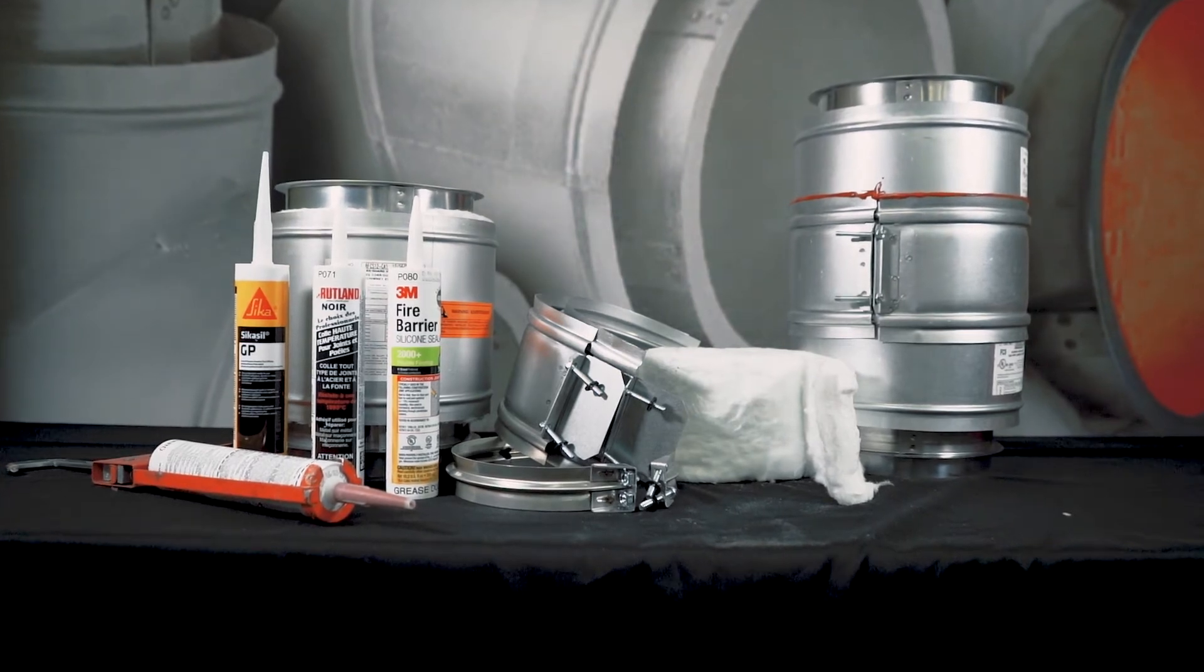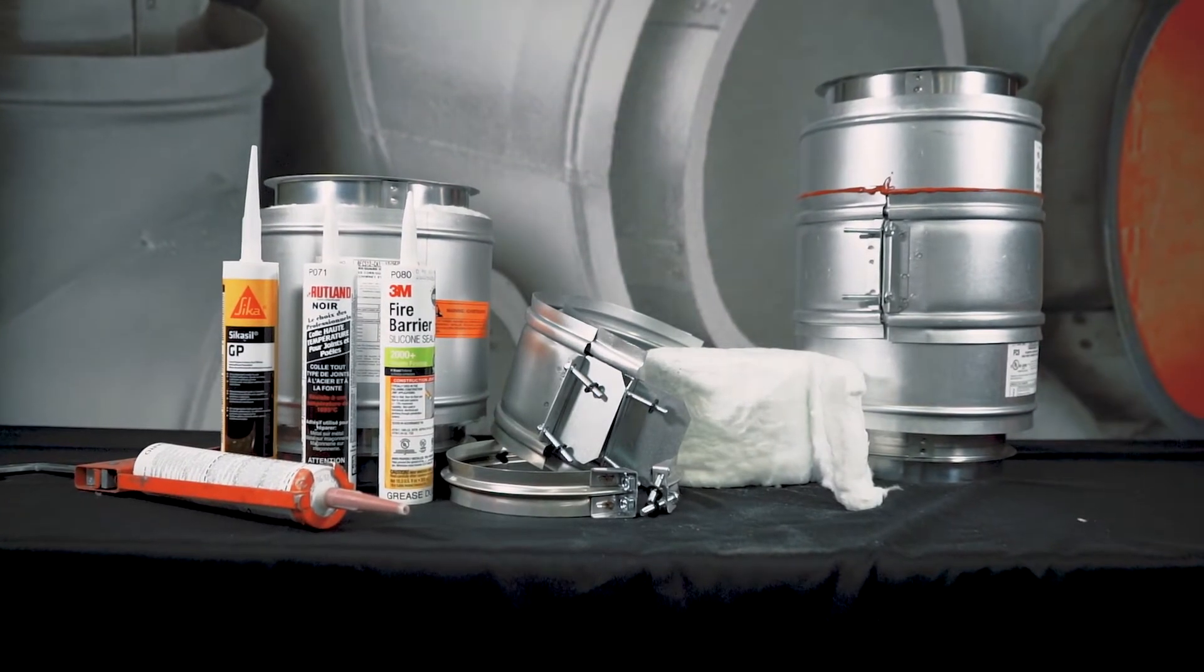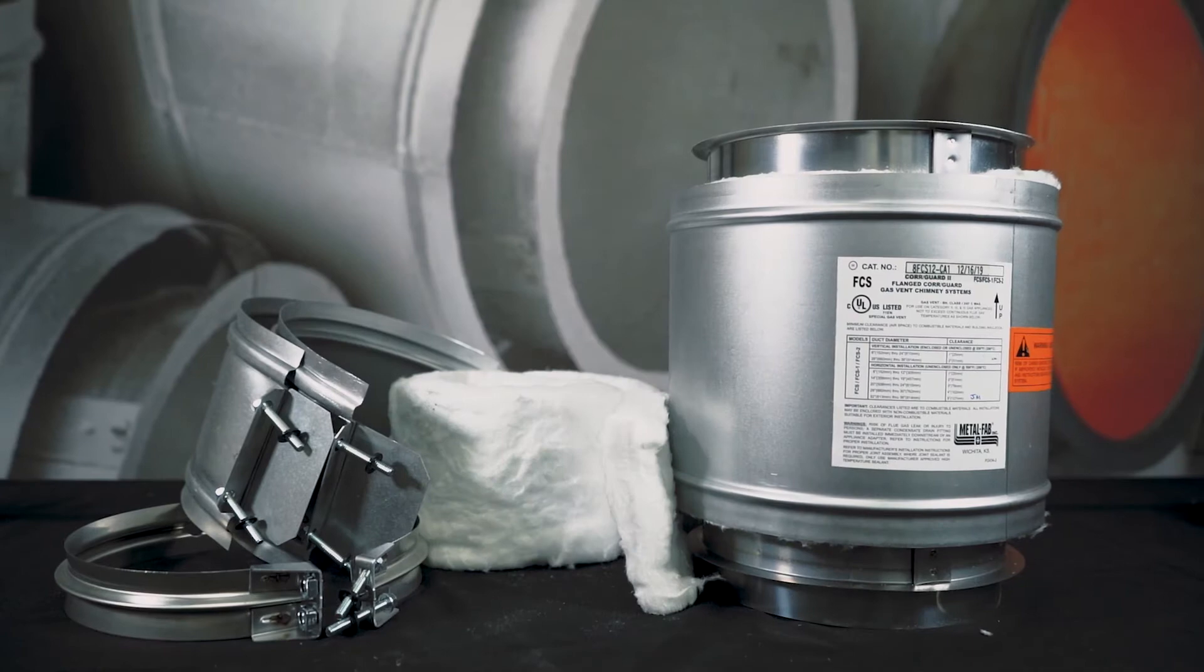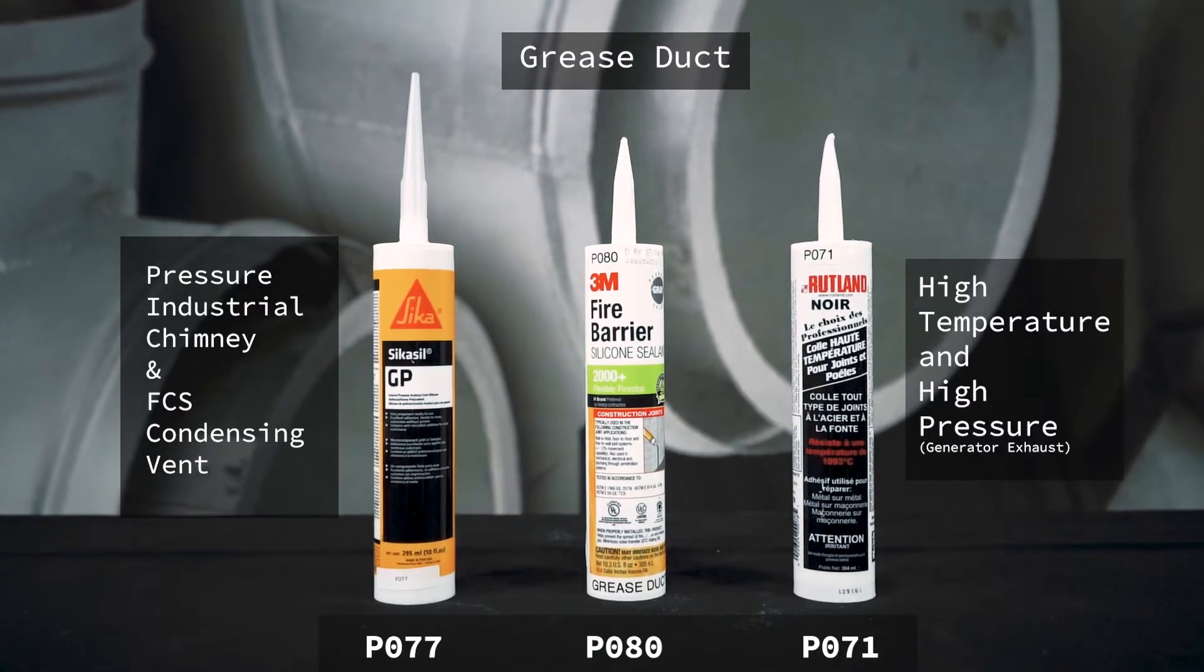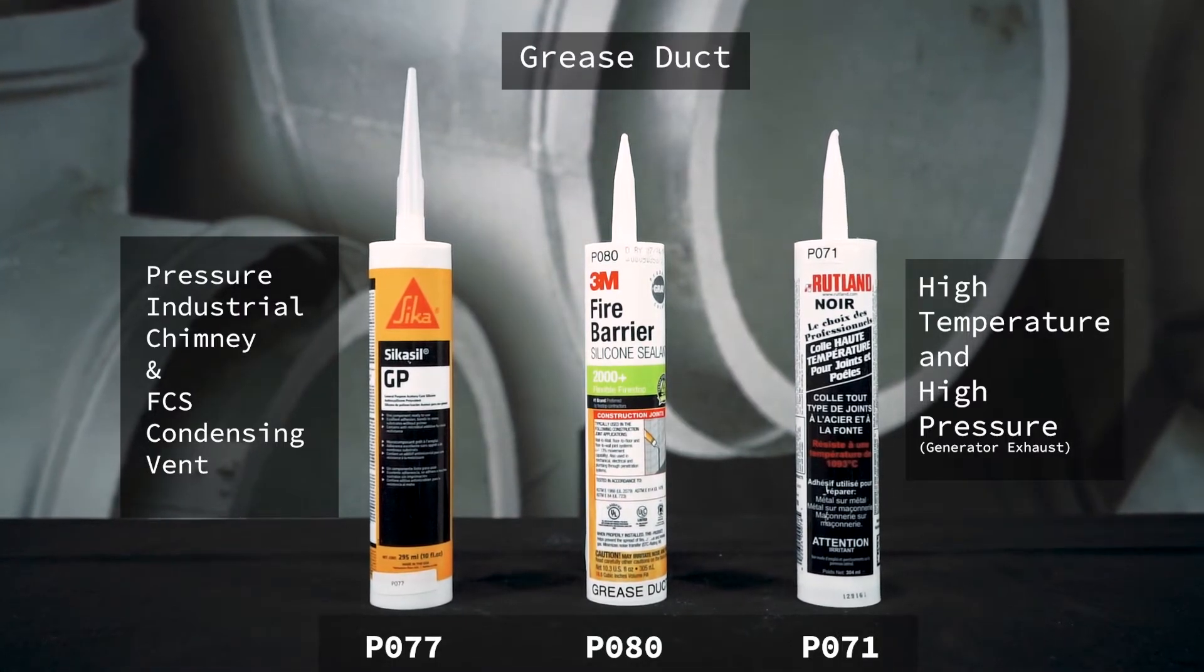This video covers the joint assembly for MetalFab's commercial venting products. Depending on venting application, you will use one of these three sealant types.